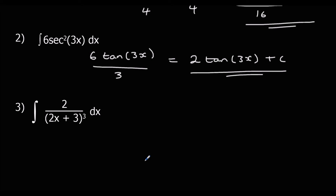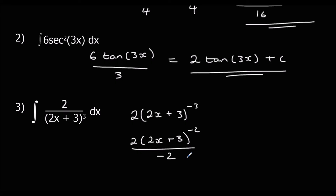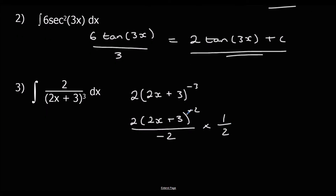Question 3: first rewrite it as (2x + 3) to the power of negative 3. Now integrate around the bracket normally — add 1 to the power, so negative 3 plus 1 is negative 2, and divide by the new power. Then divide by the bracket differentiated, which is 2, so times by one half. Cancelling the 2s gives us minus one half times (2x + 3)^(−2) plus c.